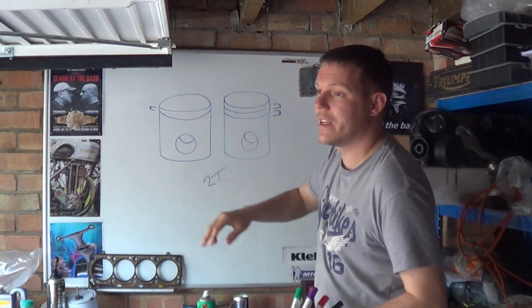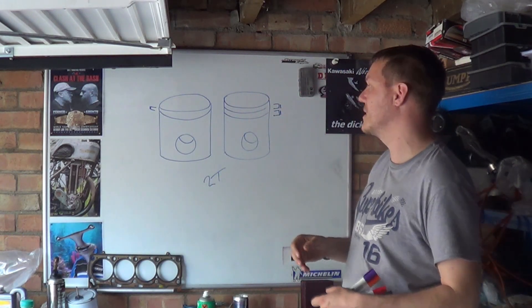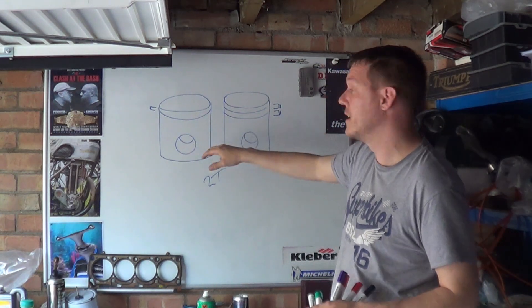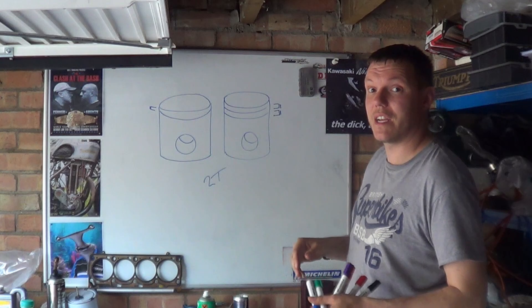You only have one ring to seal, which means that if any gases do make it past, that's it. You're going to start losing compression because there is only one ring. Where with your second ring, there is a nice backup.